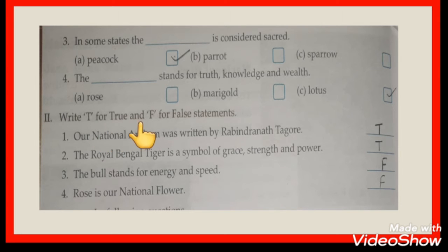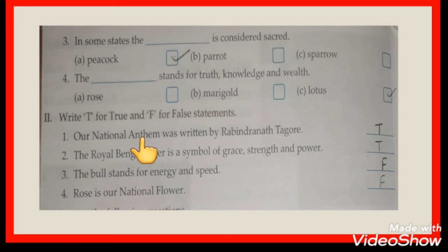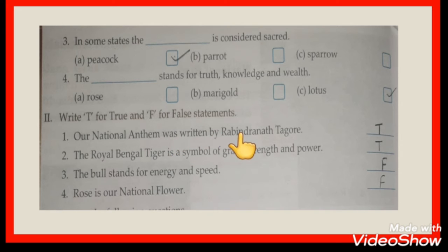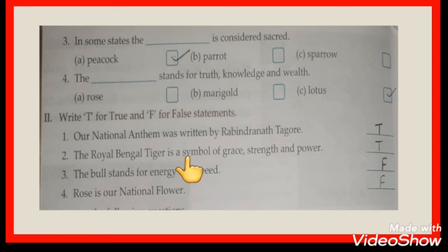Next, write T for true and F for false statements. We have to identify which statements are true and which are false. First: our national anthem was written by Rabindranath Tagore — this is a true statement. Second: the Royal Bengal Tiger is a symbol of grace, strength and power — this statement is also true.